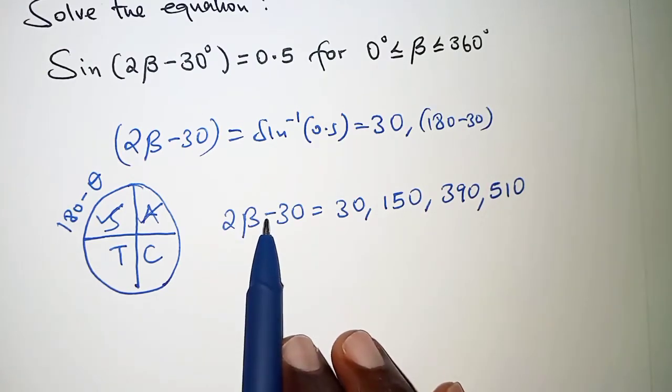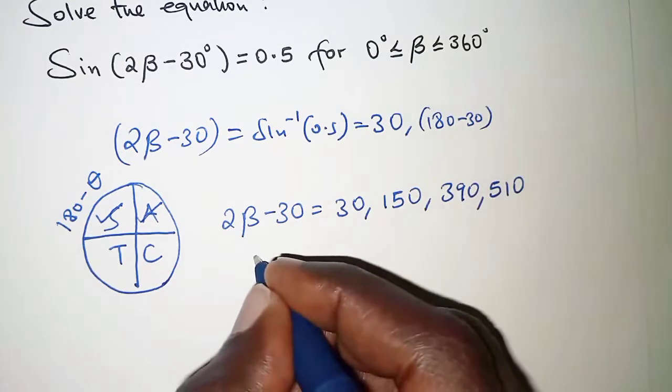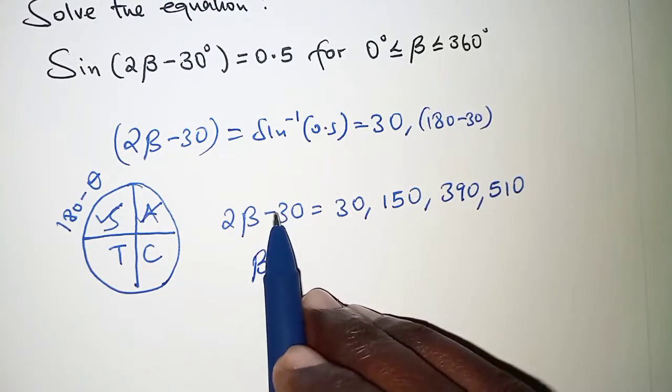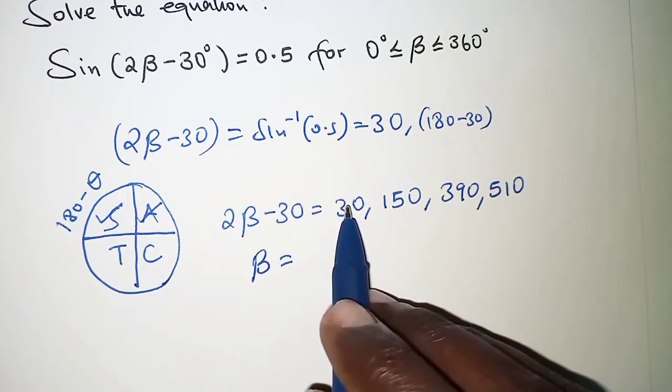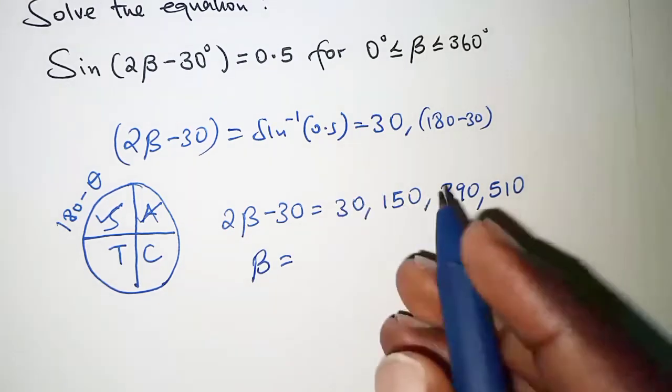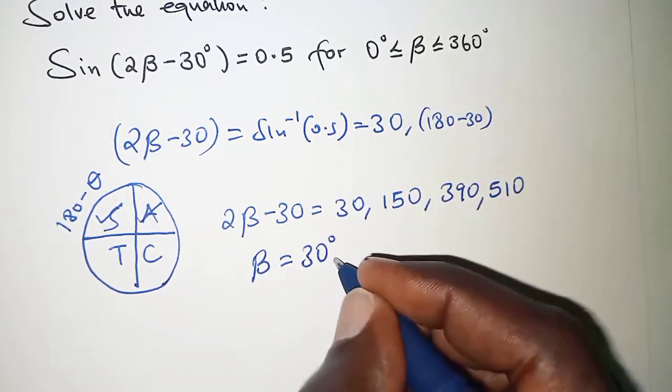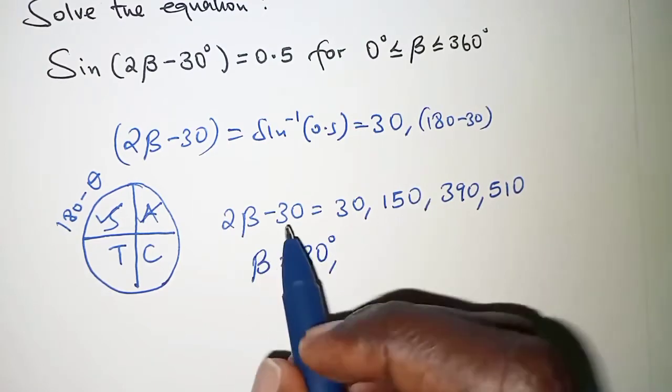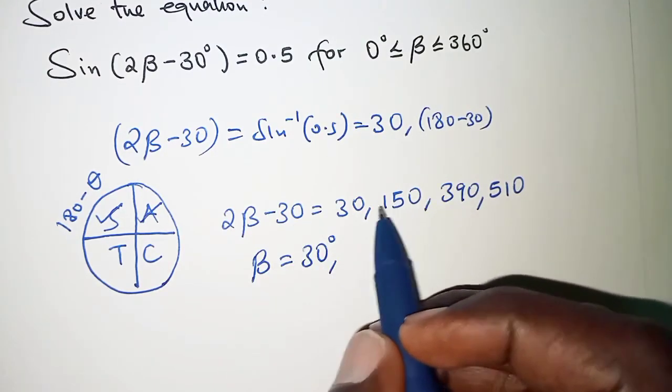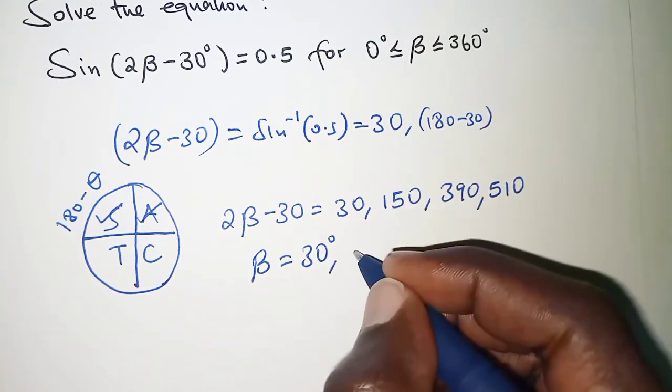So twice beta minus 30 is equal to 30. Therefore beta becomes... If we equate that we'll have negative 30 crossing so that you have 30 plus 30 that is 60. Beta therefore becomes 60 divided by 2, and that is 30 degrees. For 150, negative 30 will cross so that we have 150 plus 30, that is 180. 180 divided by 2 should be 90.